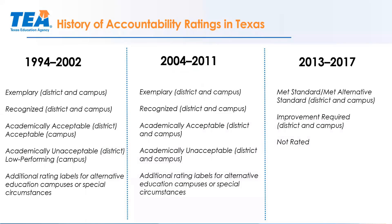Let's get started on understanding our current accountability system. To understand it, let's take a quick look at the history of accountability in Texas. Beginning around the 1980s, we had our state assessment, and the first year in Texas that we assigned campus and district performance with a rating label was 1994. We assigned ratings of exemplary, recognized, acceptable for districts and campuses, and academically unacceptable or low-performing for campuses from 1994 to 2002.